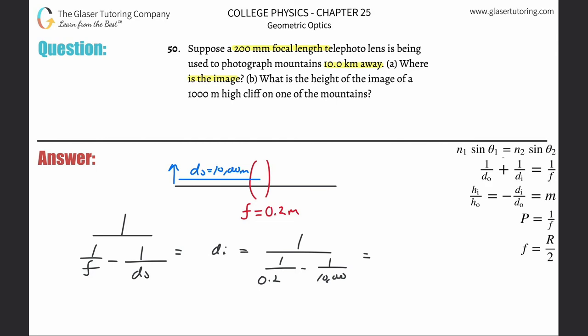Let's do the denominator first: 1/0.2 minus 1/10,000, and then 1 divided by that value. It's basically 0.200 meters. Notice what happens to the image distance as the object distance goes up and up. This whole term basically goes to zero, and therefore the image distance is going to basically be equal to the focal length.